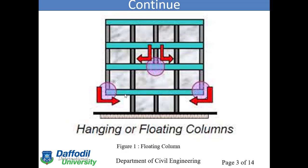The load is transferred in the form of a point load. In this beam, the floating column transfers the load as a point load, and this beam is very critical when you are designing — you need to take care of what kind of load it can take. The column transfers the load to the beam, and that beam is called the transfer beam. There are also two main columns that transfer the load to the foundation.